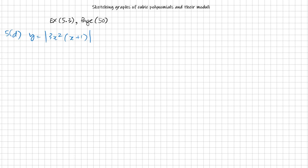To find the x and y intercepts, when x equals 0, y equals 0, so the curve intercepts the y-axis at (0,0).